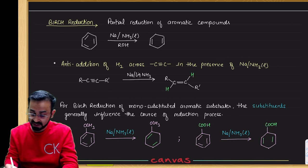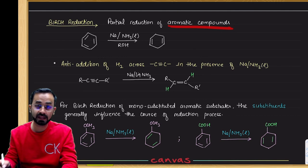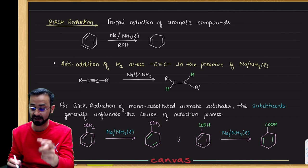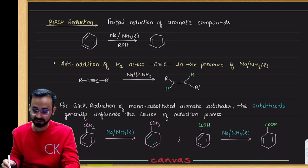You can do anti-addition of hydrogen in a triple bond, and you can do aromatic compound partial reduction. Out of three double bonds, only one double bond will reduce. The rest of the two double bonds remain, and they are not conjugated.